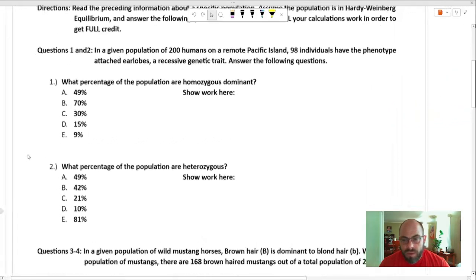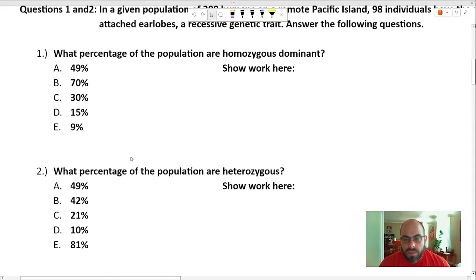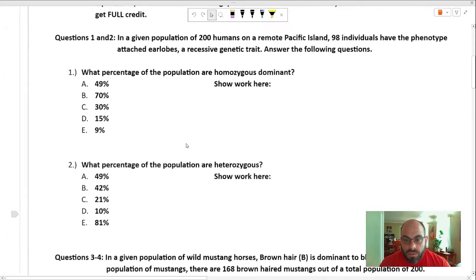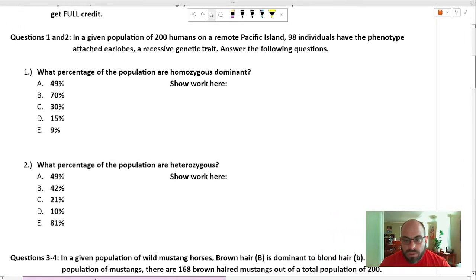All right, so let's talk about some problems here. Where did I get these problems? Found them on the webs. They're actually pretty good problems though, so we're going to just do them. Sorry if you're a teacher and you're assigning this to your kids. It's okay, it's going to be all right. All right, so in a given population of 200 humans on a remote Pacific island, 98 individuals have a phenotype of attached earlobes, a recessive genetic trait. All right, so let's look at this.